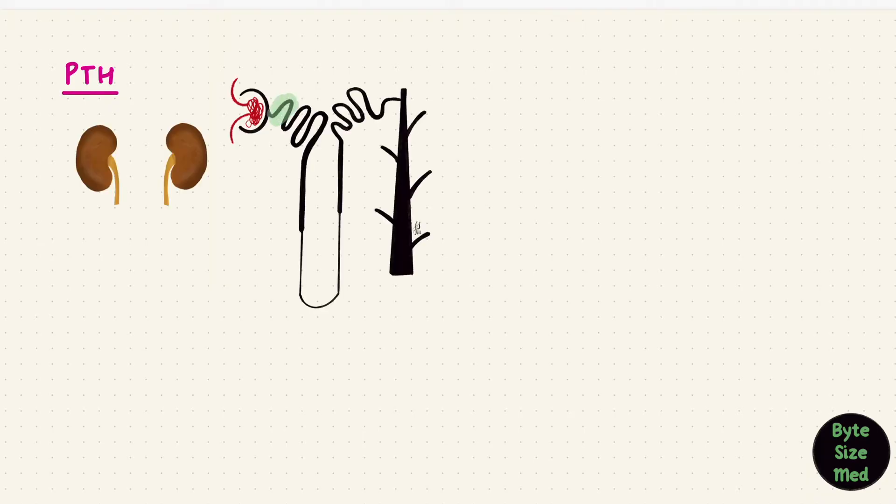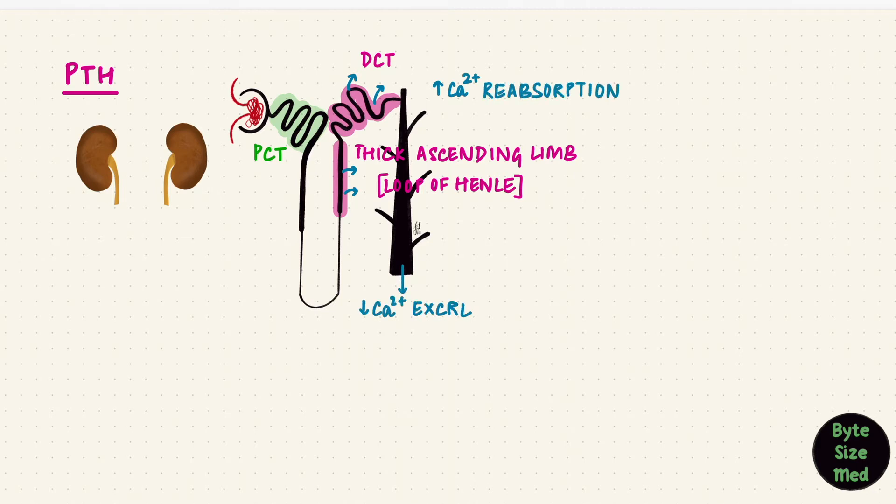The proximal tubule, the thick ascending limb of the loop of Henle, and the distal convoluted tubule. The proximal tubule is not under hormonal control, so PTH doesn't work there. It works on the other two, and increases calcium reabsorption, and thus there will be less calcium excreted by the kidney.